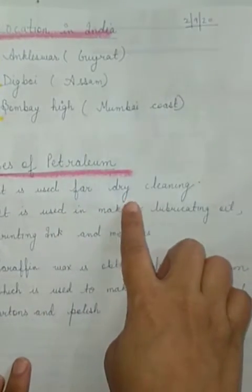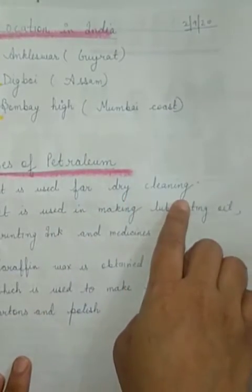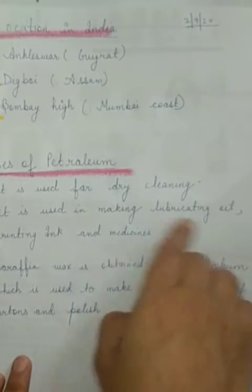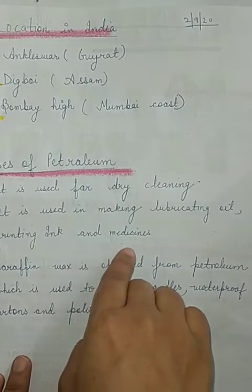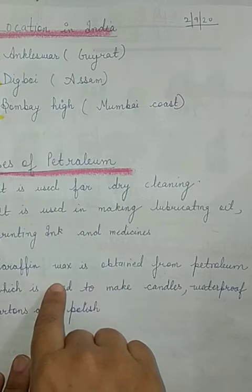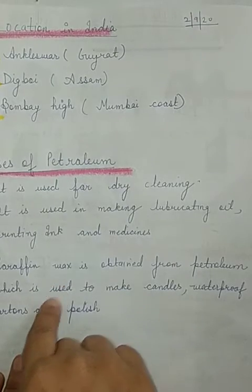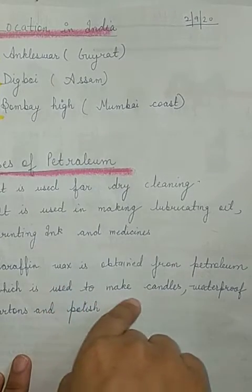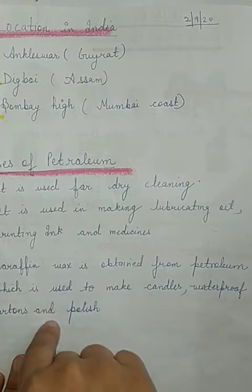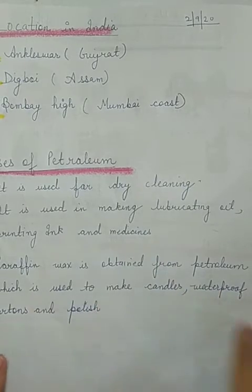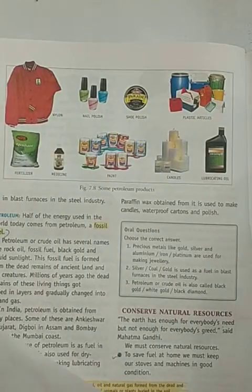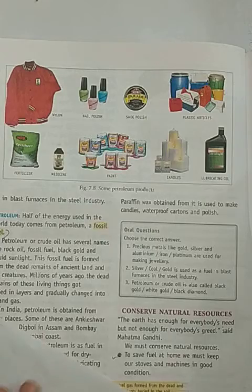Now, uses of petroleum. Petroleum has a wide variety of uses. It is used for dry cleaning, making lubricating oil, printing ink, and medicines. Paraffin wax, which is obtained from petroleum, is used to make candles, waterproof cartons, and polish.